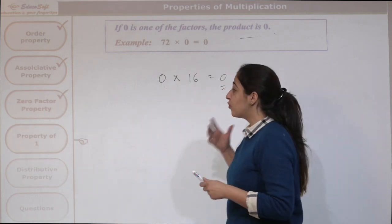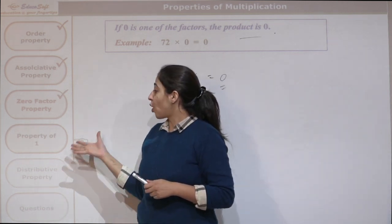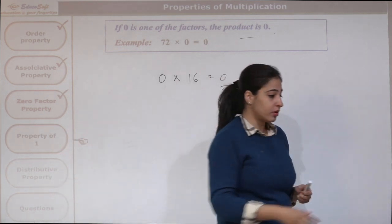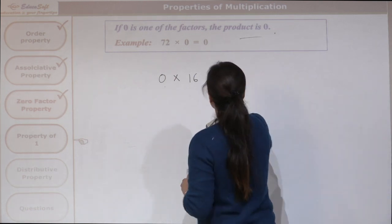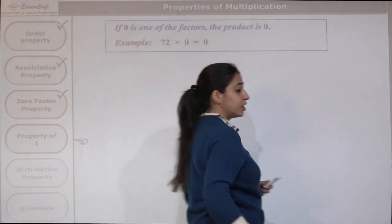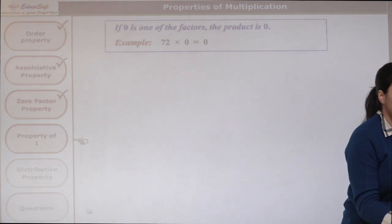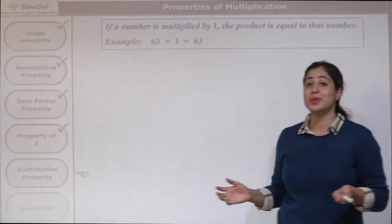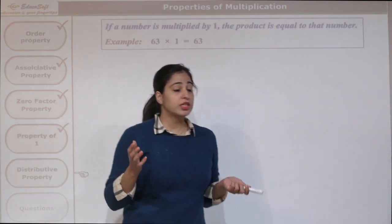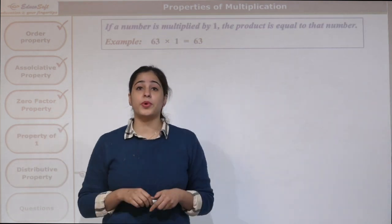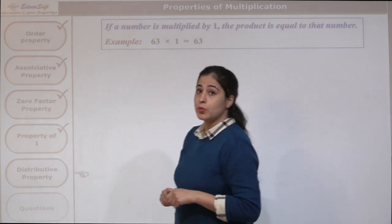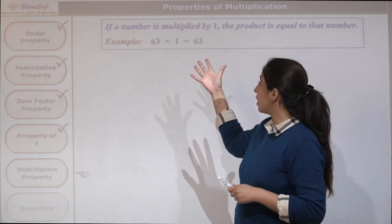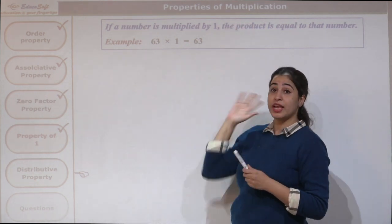Now the fourth property is the property of 1. What does that say? Here, one of the factors is going to be 1. This is the property of 1. So if a number is multiplied by 1...